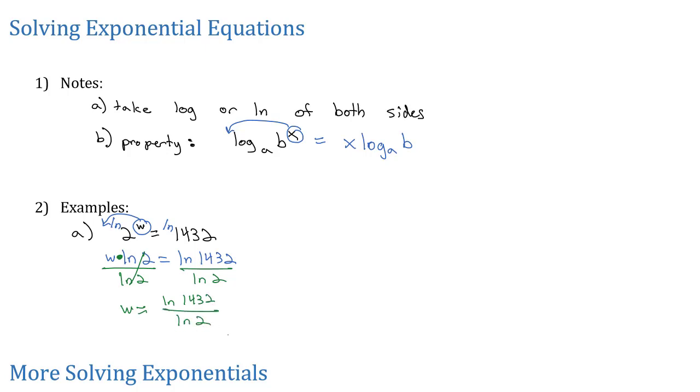Because my calculator has a natural log button, I can type this in just like it looks. But be careful - when your calculator hits the natural log button it probably opens a parenthesis, so make sure you also close the parenthesis at the end. So we've got natural log parenthesis 1432 divided by natural log parenthesis 2. When we do that, W is equal to about 10.484 and we've solved.